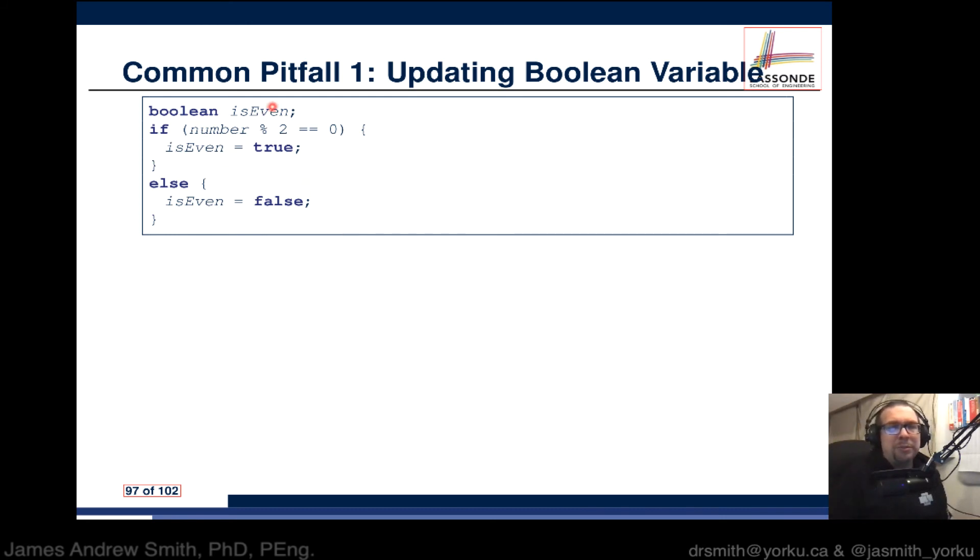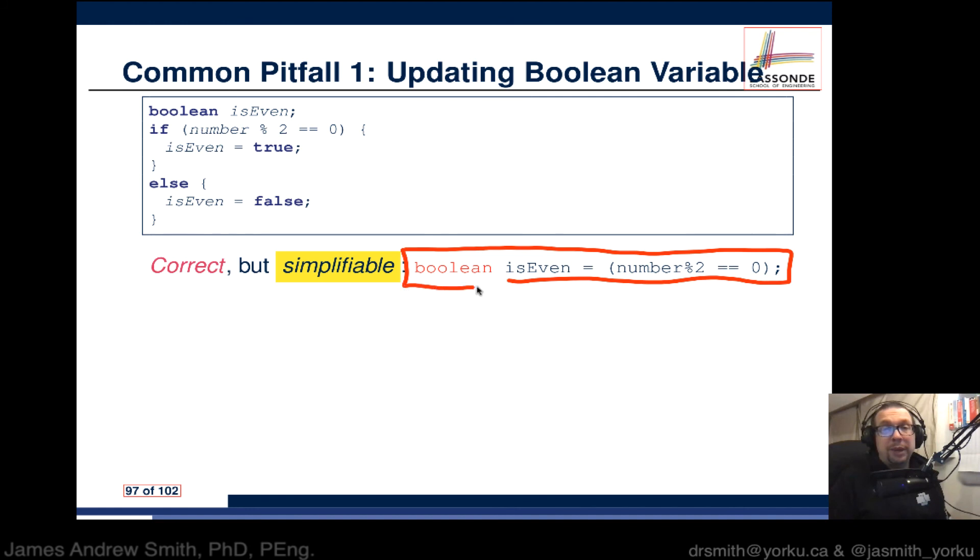In this case, we've got a boolean isEven and there's an if-else that determines whether this variable is even. You do a modulo of two on the number. If it's zero, then it's an even number and you set isEven to true, otherwise you set it to false. There's nothing wrong with this, it's perfectly correct. But you could simplify it. You could replace these seven lines with one line: boolean isEven equals number modulo 2 equals 0. This is entirely legal, both are equivalent.